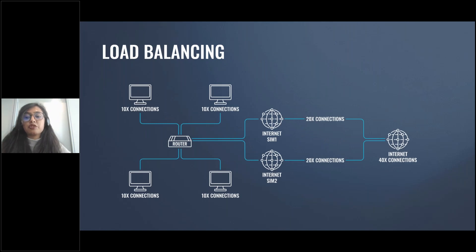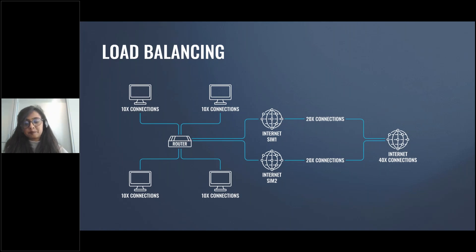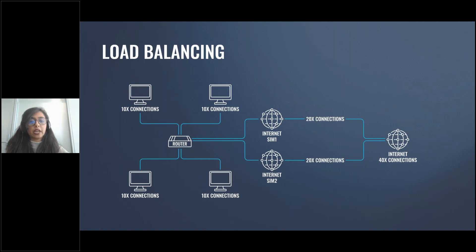Load balancing is used to efficiently distribute the resources of multiple internet service providers on one device among many clients and connections. It is usually used to provide better service to an entire network by distributing existing resources. Load balancing distributes traffic over multiple connections — it does not bond the connections together but distributes the available resources among clients. For example, in a network with four clients that have established 10 connections to the internet each, taking a 50/50 ratio, load balancing can distribute this traffic equally over two different network interfaces using different ISPs.